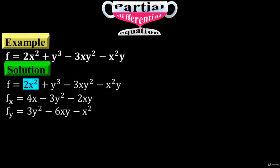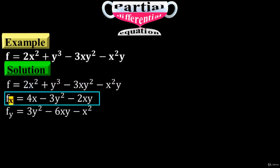Ignore 2x squared because there is no y variable — the independent variable is y. This completes the first order.